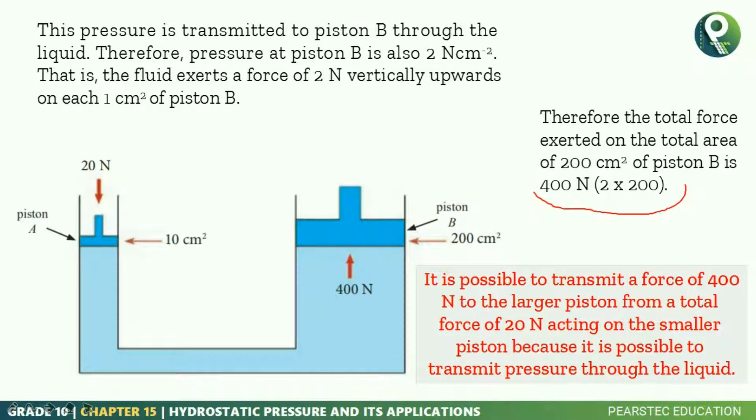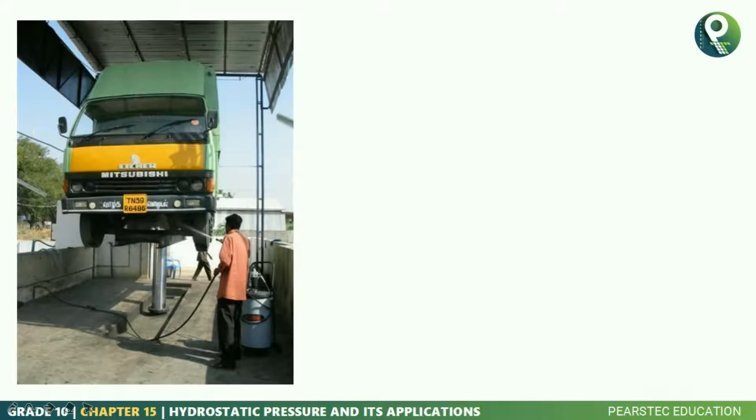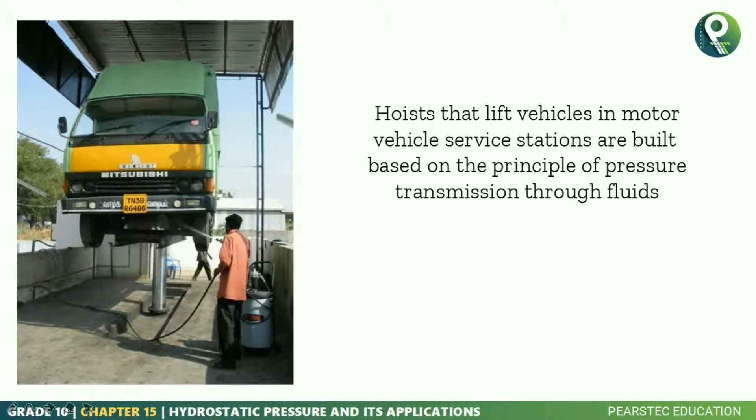If it is possible to transmit, look at this beautiful thing. You are only giving 20 newton force over here, and how much force you are getting as a result? 400 newton. That's because of this liquid pressure transmission. It's possible to transmit a force of 400 newton to the larger piston from the total force of 20 newton acting on the smaller piston because it's possible to transmit pressure through the liquid. That's why these kind of vehicles can be lifted very easily. The hoists that lift vehicles in motor vehicle service stations are built based on the principle of pressure transmission through fluids.